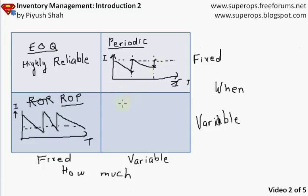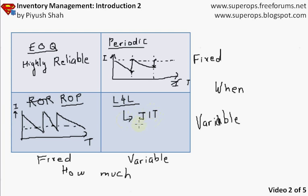When both how much and when are variable, this is called the lot-for-lot system, L-for-L. Lot-for-lot systems indicate I order whatever I need, whenever I need it. These systems are highly suitable for just-in-time or lean usage, but they become very expensive and monitoring is expensive. So these are the four types of inventory systems.